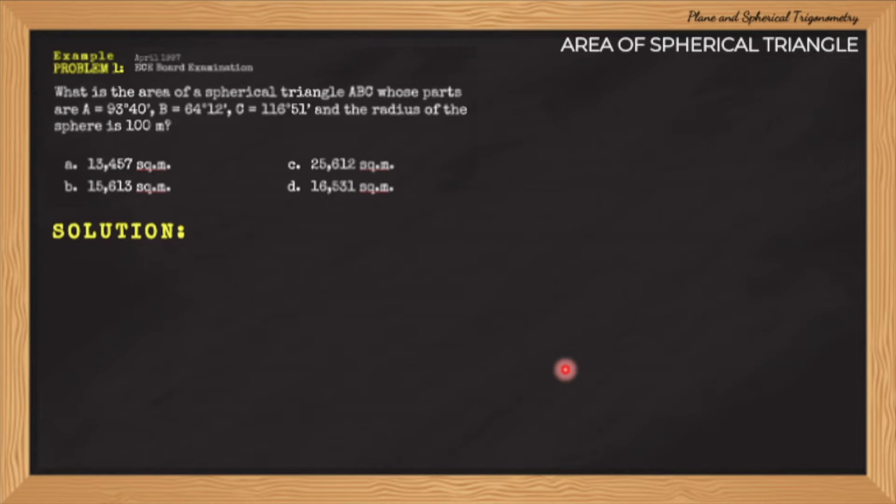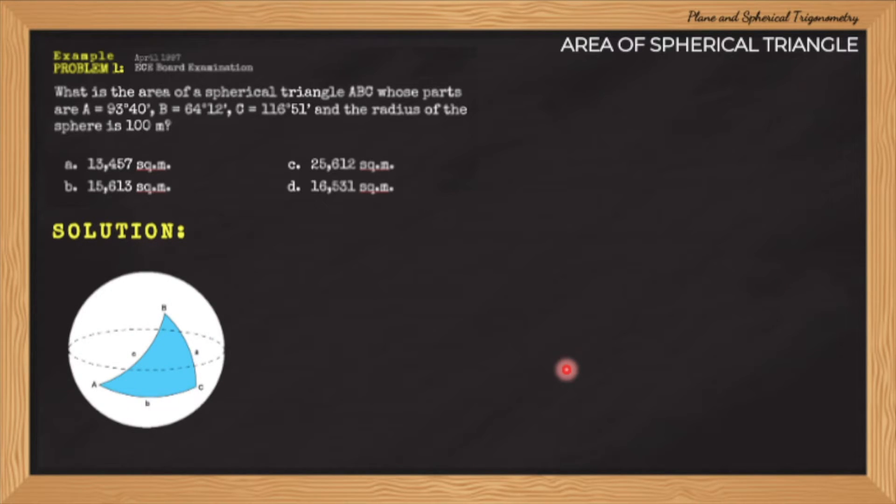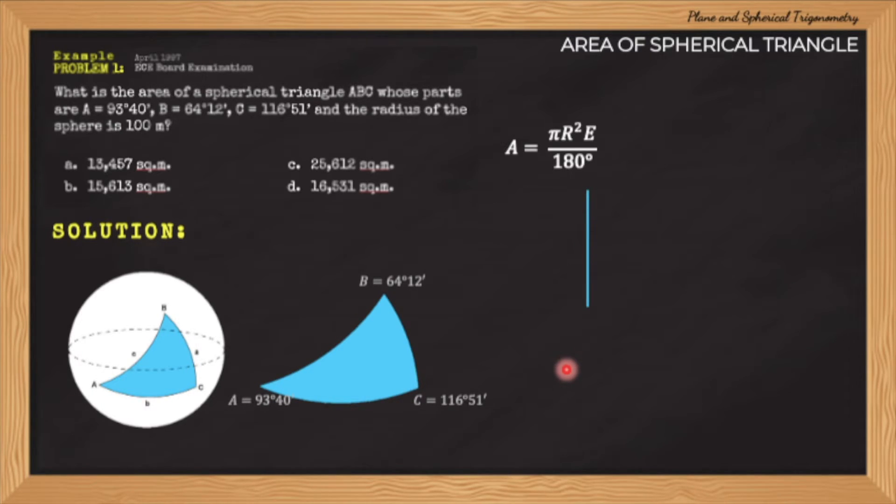To solve this problem, we are given the values of angle A, angle B, and angle C of the spherical triangle. Considering that the formula for the area is pi R squared E divided by 180 degrees, and the value of the radius is given in the problem which is 100 meters, we have enough information to solve for the area of the spherical triangle.